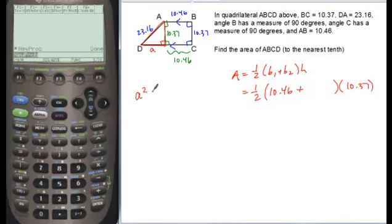So we can use Pythagorean Theorem here. I'll call this A, and using A squared plus B squared, which is 10.37, the sum of the squares of the legs is equal to the square of the hypotenuse.